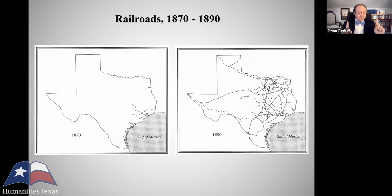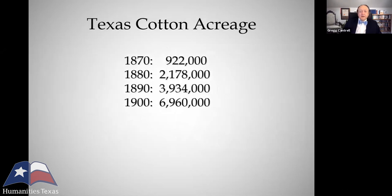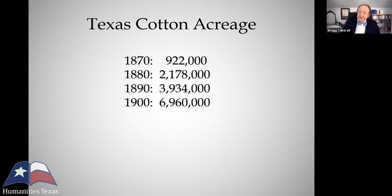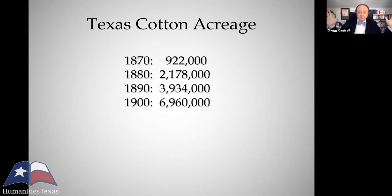This massive population growth meant several things. First of all, demand for land skyrocketed, meaning that land prices rose. Here's another set of figures, in some ways even more staggering than the population figures: this is the number of acres of Texas land planted in cotton over these decades, growing even faster than the population. All of these new Texas cotton farmers are now in competition with all those other new cotton farmers in India, Egypt, Brazil, and other places, and this guaranteed that cotton prices would remain low even though production was exploding worldwide.